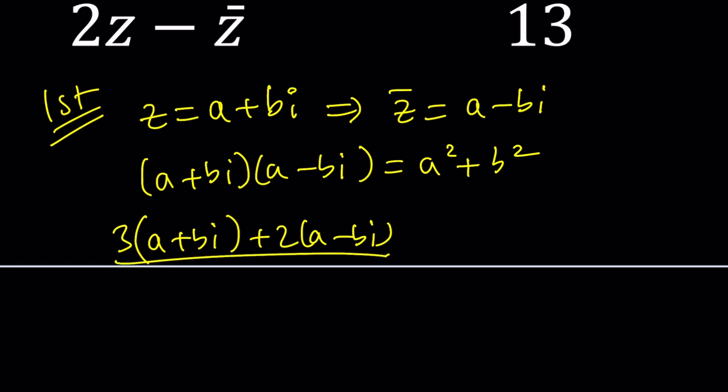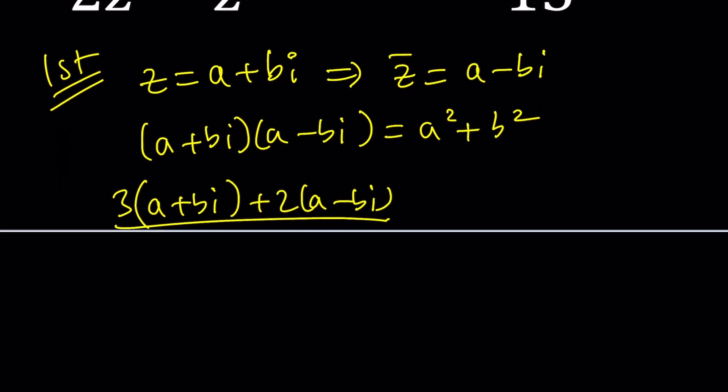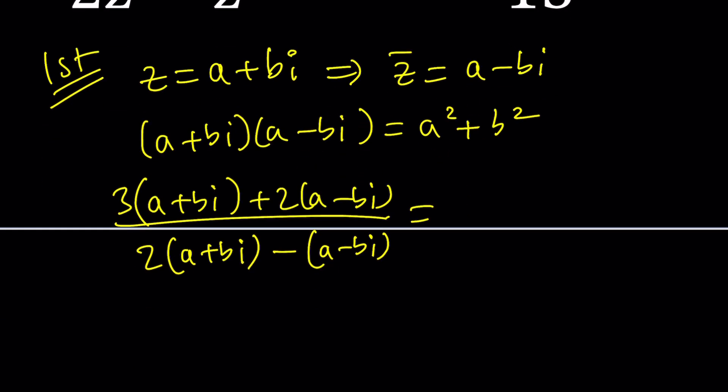and then that is divided by 2z minus z bar which is a minus bi and this is supposed to equal 23 minus 28i divided by 13.